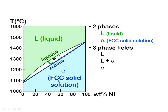Now looking at a binary nickel diagram: the horizontal axis shows weight percentage of nickel, increasing from 0% on the left to 100% on the right. The maximum temperature shown is 1600 degrees Celsius. There are two key lines: the upper arc-shaped line is called the liquidus line, and the lower line is the solidus line. Above the liquidus line, all portions are liquid; below the solidus line, all portions are solid; and between the liquidus and solidus lines, both liquid and solid coexist.